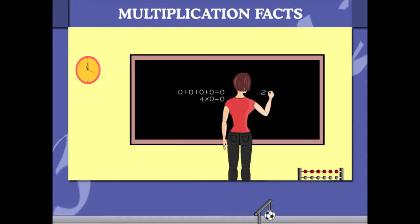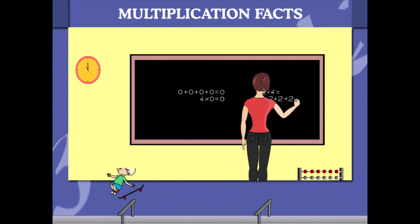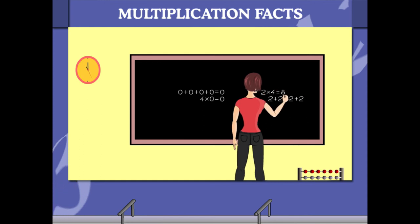What is 2 into 4? It is 2 added 4 times. This brings the answer 8.